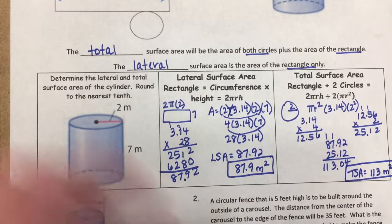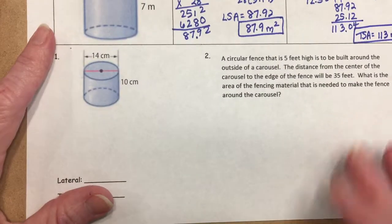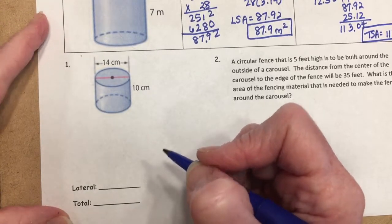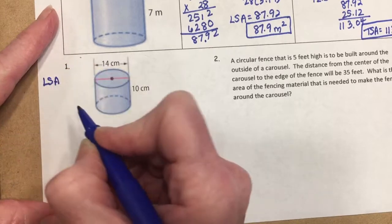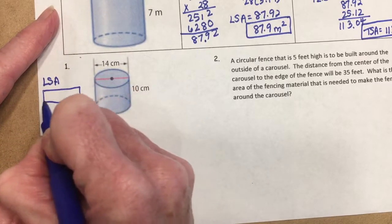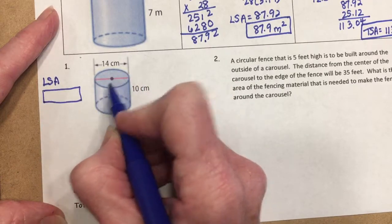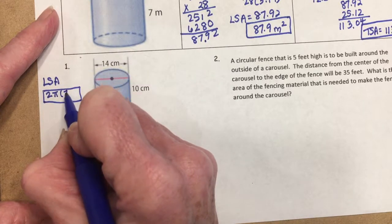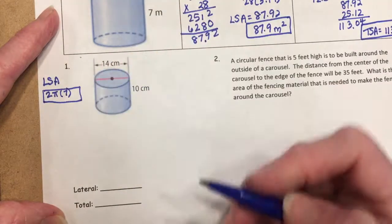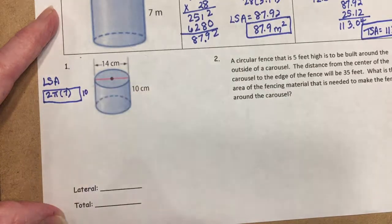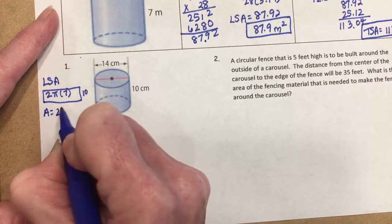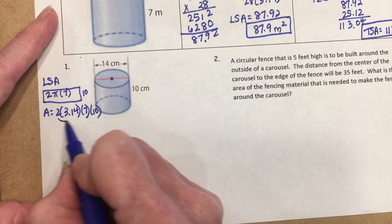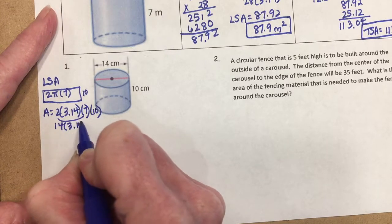For the next example, we're finding lateral and total surface area. Starting with lateral: the circumference is 2 pi r. The diameter given is 14, so the radius is 7. The height of the cylinder is 10. So lateral surface area equals 2 times 3.14 times 7 times 10.